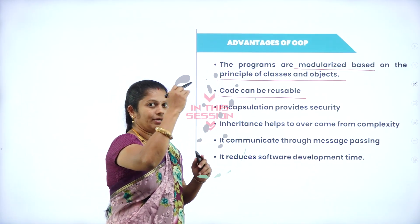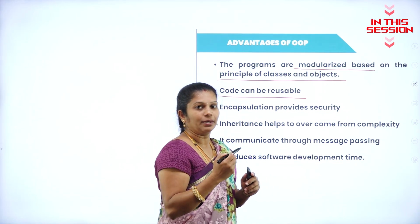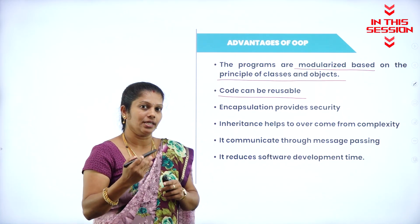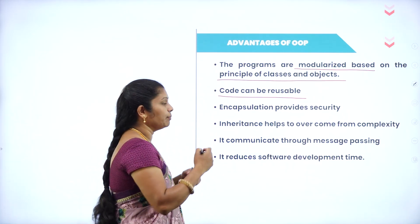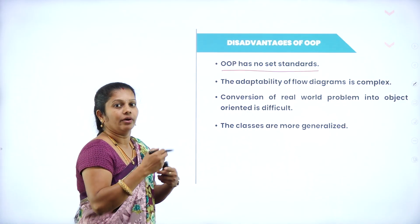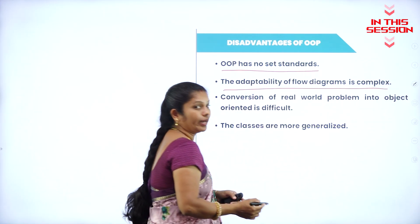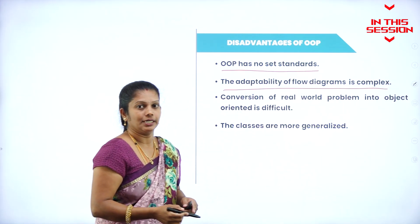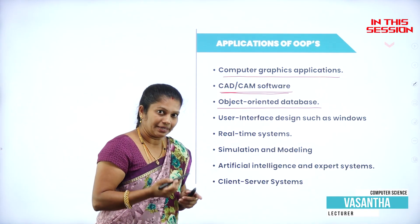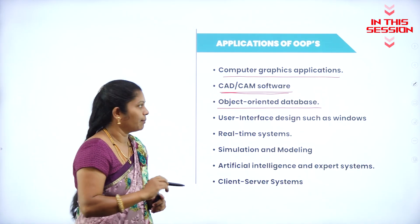In recent times, whatever properties the parent has, the same properties are transferred to the child class, so there's no need to write the code again. Obviously the code can be reusable. Systematically we cannot always write the program easily, and the flow diagram is also very complex. If I want to maintain a large amount of data in a systematic manner, there also we are using the Hoops concept.